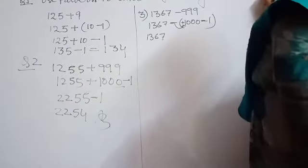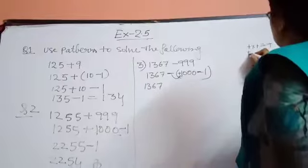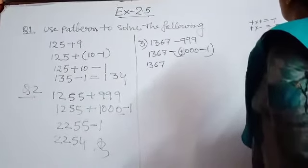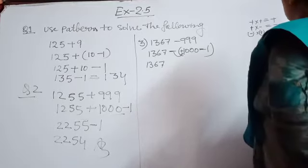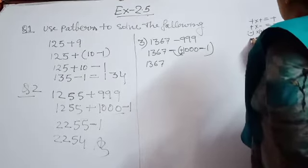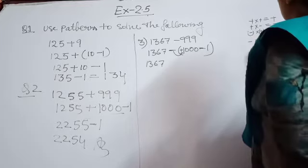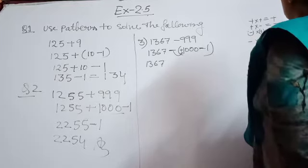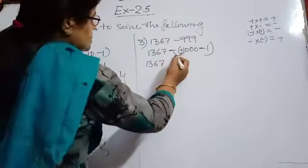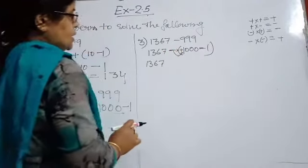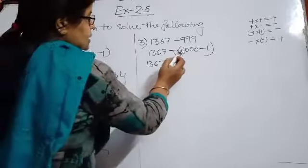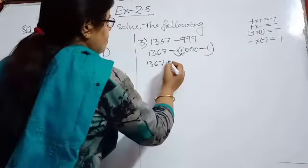Now see the sign rules: plus into plus equals plus; plus into minus equals minus; minus into plus equals minus; and minus into minus equals plus. These are multiplication rules because while we are opening a bracket, we always multiply the sign. So here we have minus into plus, which becomes minus, and that applies to 1000.